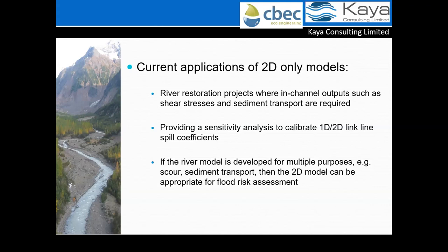2D-only models can also be used as a sensitivity tool to calibrate the 1D-2D link lines. Often we use default values for 1D-2D link lines, and hydraulically many of these don't really represent exactly what the process should be of water passing from the channel into the floodplain. There is certainly scope to use the 2D model to examine these link lines. Also, if a river model has been developed for multiple purposes such as scour and sediment transport, the 2D model can be appropriate for flood risk assessment as well.